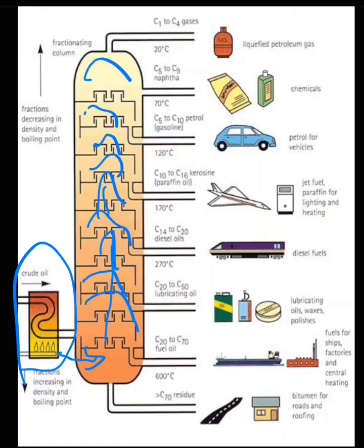So the heaviest can be turned to tarmac, like to pave roads or to seal houses for roofing, where the fuel oils are used for factories and ships.